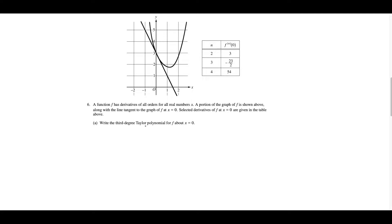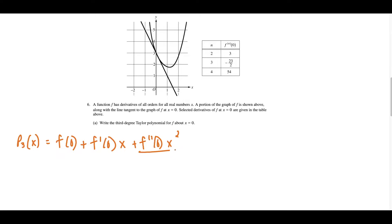For part A, we want to write the third degree Taylor polynomial for f about x equals 0. The setup is: p sub 3 of x equals f(0) plus f prime of 0 times x over 1 factorial, plus f double prime of 0 times x squared over 2 factorial. Note that third degree means the highest power is x to the third, so we go out to f triple prime of 0 times x to the third over 3 factorial.